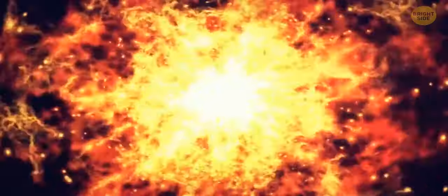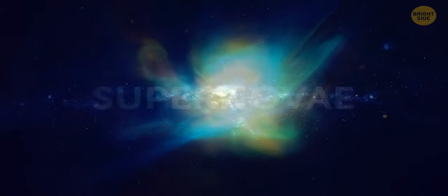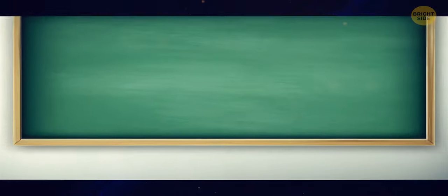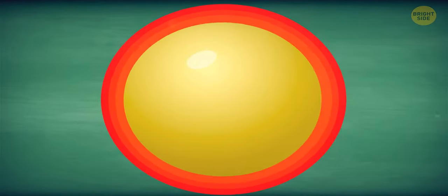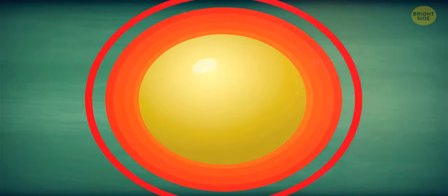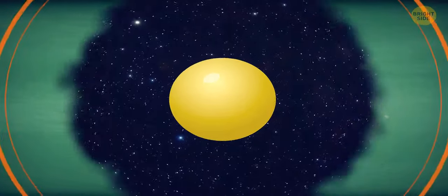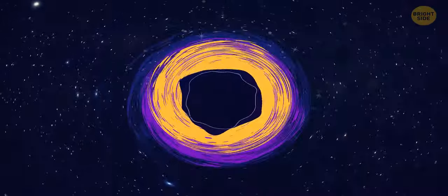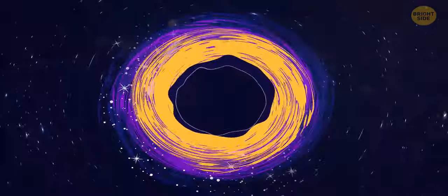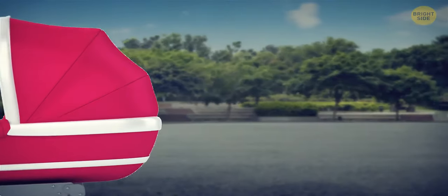This blast is called supernova. During this boom, the outer layers of the star fly away, while the core gets squished together by its own gravity. If the squished core is heavy enough, it can keep squishing until it becomes a black hole. And just like that, a black hole is born.